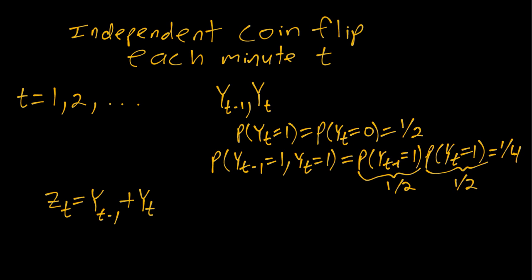But again, if we think about does the t matter here? Well, zt depends on yt minus one and yt. And we just argued that the t does not matter for the distribution of yt minus one and yt. So that property translates into zt as well.